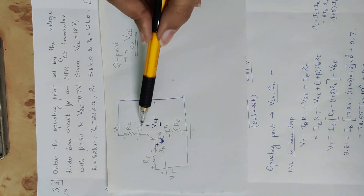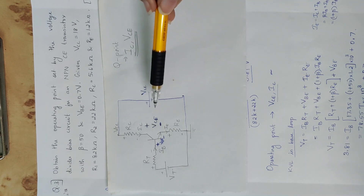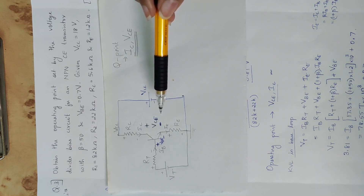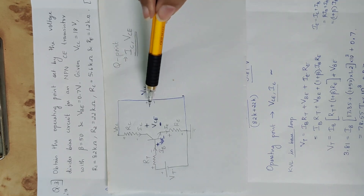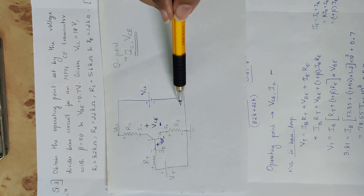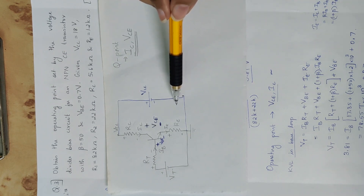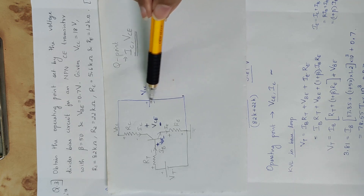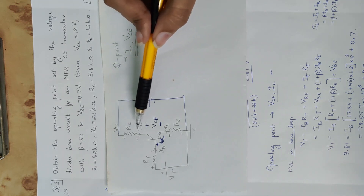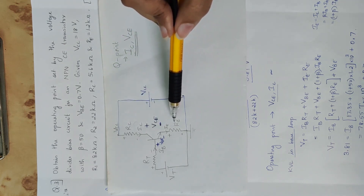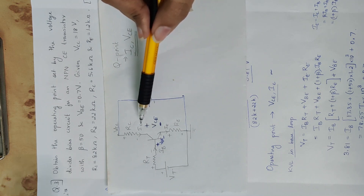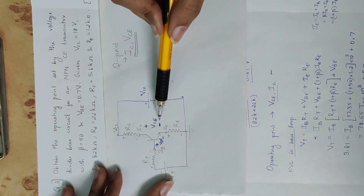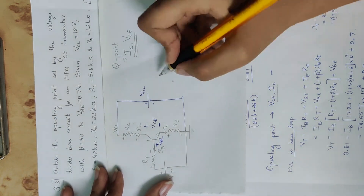We have two parameters in the output loop. If we apply a KVL equation to this output loop, we have IC as an unknown and VCE as an unknown. Since we have two unknowns, we will look at another equation to solve them.